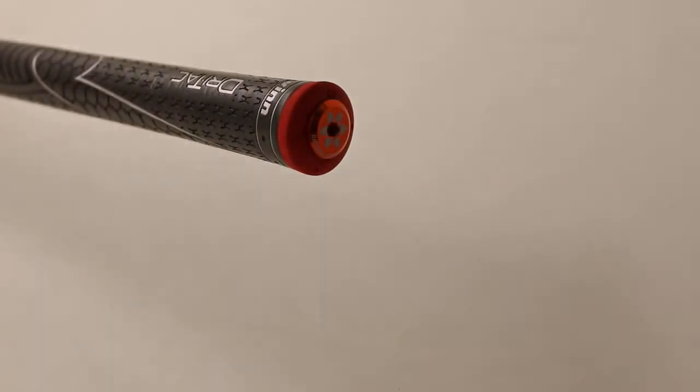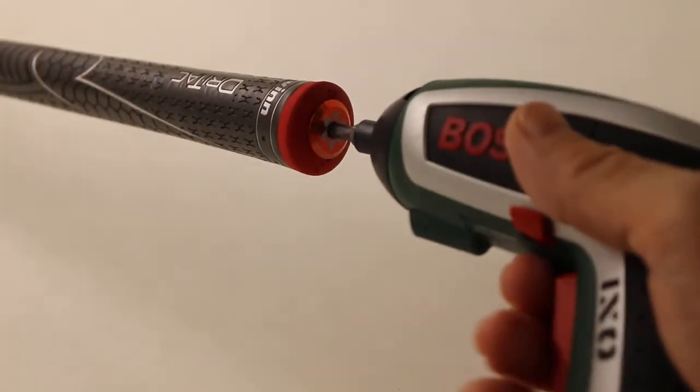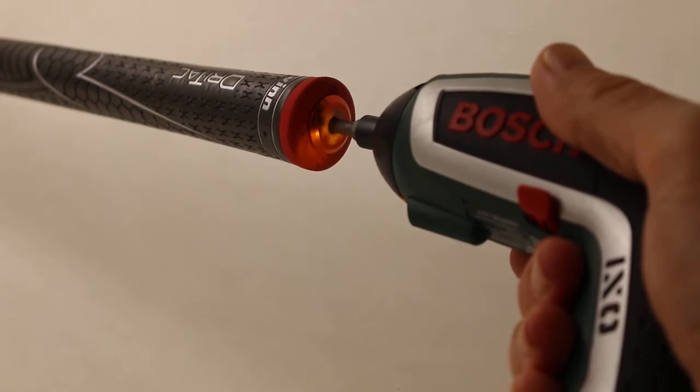Once the weight is pushed all the way in, it can be tightened with a 4mm hex key. This can be done by hand using a standard hex key, or as shown here using an electric screwdriver.